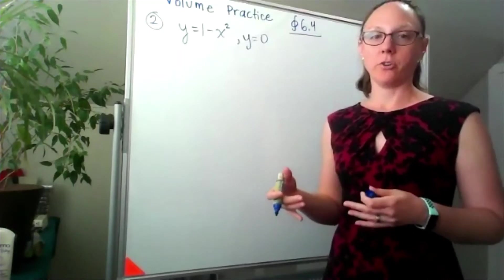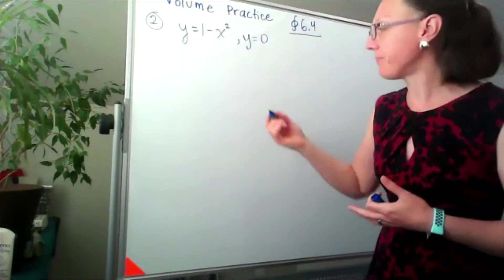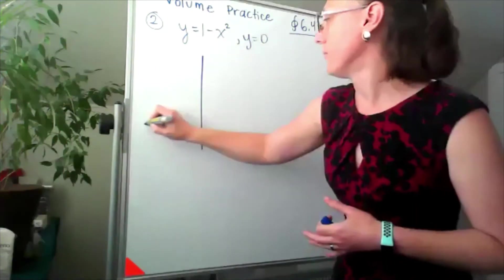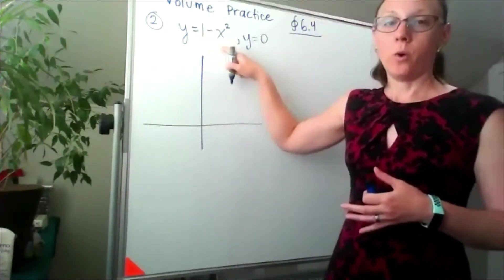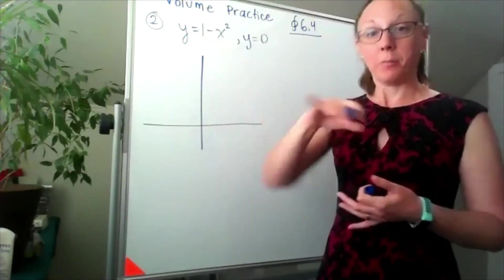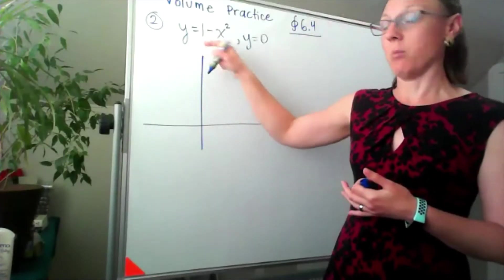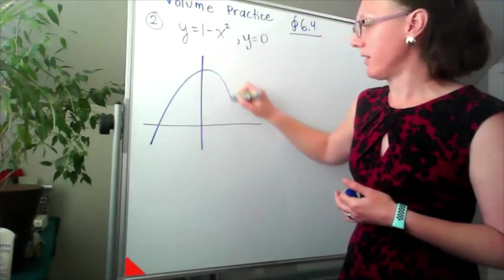The first thing I want to do is get a quick sketch of the region. 1 minus x squared, that's a parabola, but it's a concave down parabola that's been shifted up one. That's going to look like this.